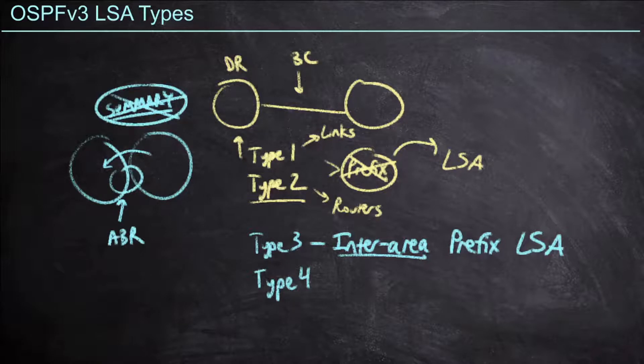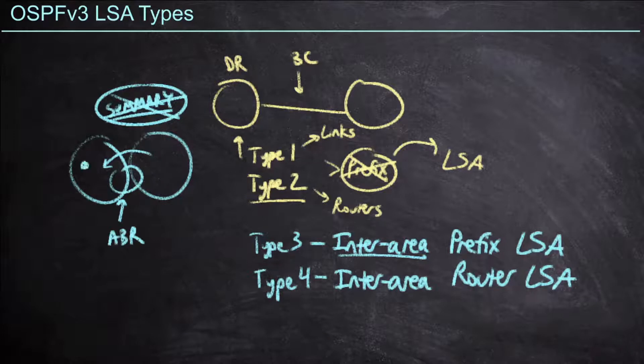Now type 4s have also been renamed, they are now called the inter-area router LSAs. And the reason we're calling it an inter-area router is we recall a type 4s advertising the location of an ASBR, an autonomous system boundary router. Now routers in other areas need to know where this ASBR lives,